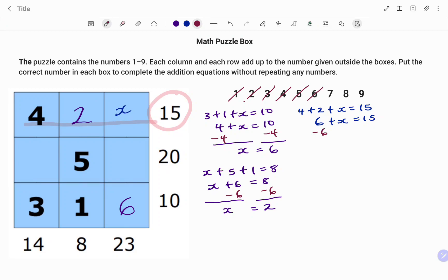I use the balance method. I'm taking out six from both sides. Six minus six is zero. I'm left with x equals 15 minus six, that's nine. So I replace my x with nine.